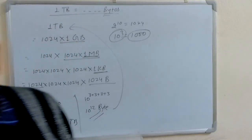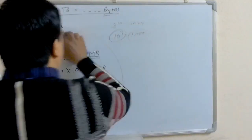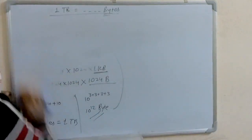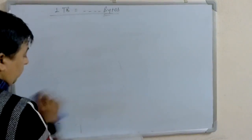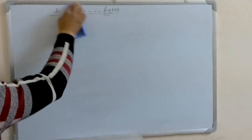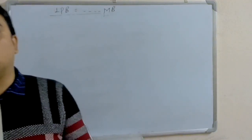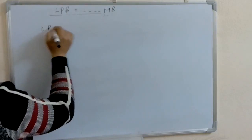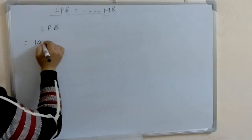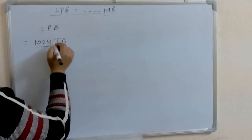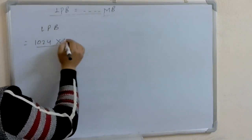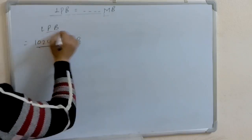Now let's take the next example. Convert one petabyte into megabytes (MB). One petabyte equals 1024 terabytes — that is, 1024 into one terabyte is equal to one petabyte.